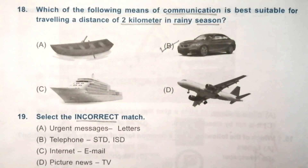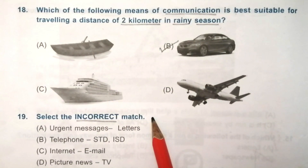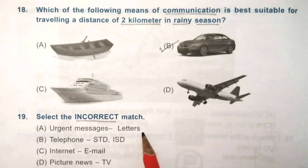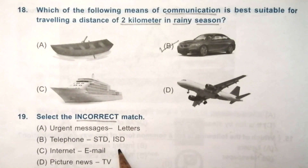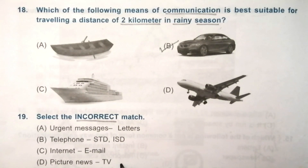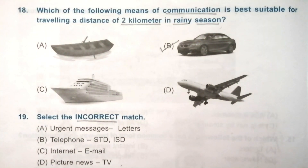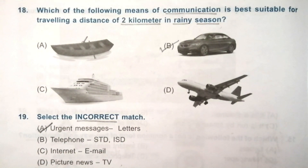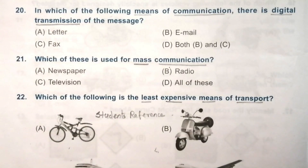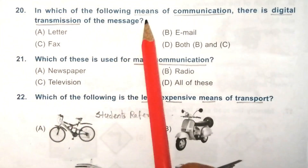Question 19: select the incorrect match. Options include: urgent messages — letters; telephone — STD/ISD; internet — email; news — TV. The incorrect one is A — urgent messages matched with letters.